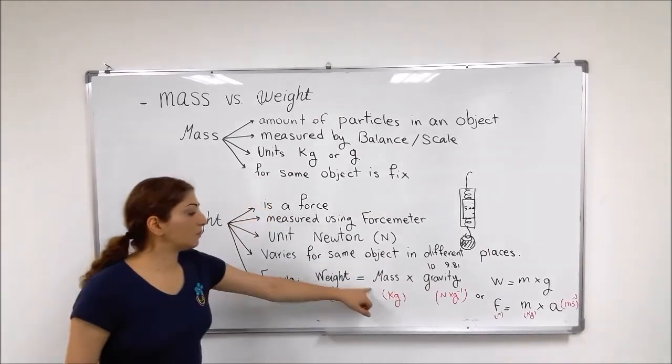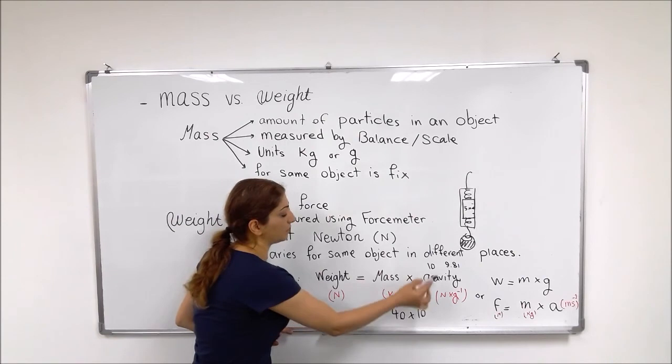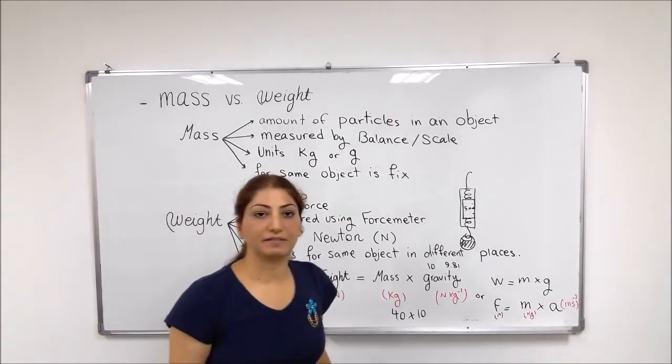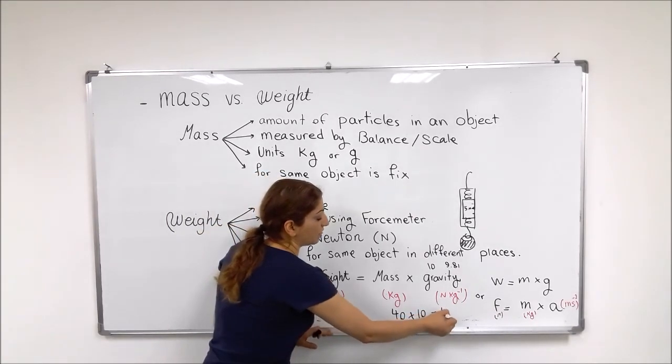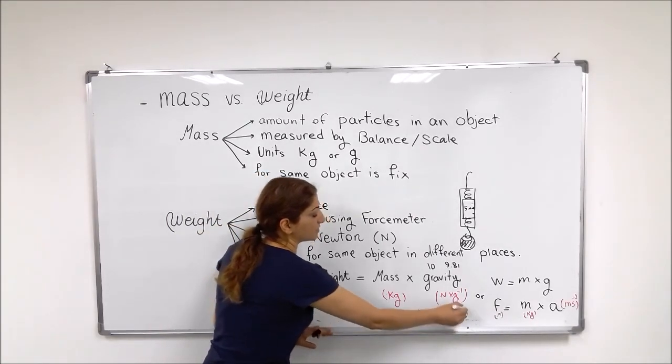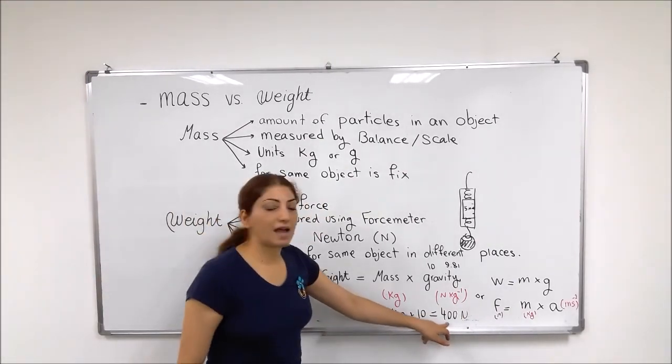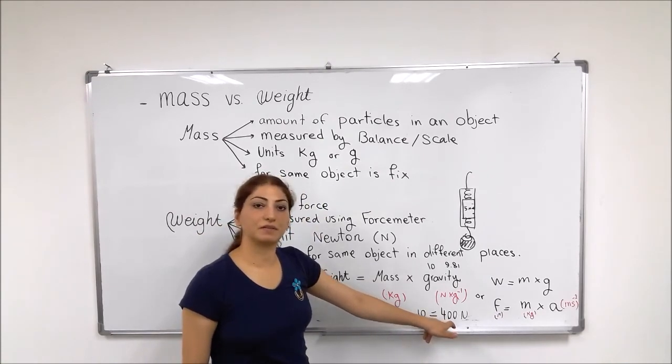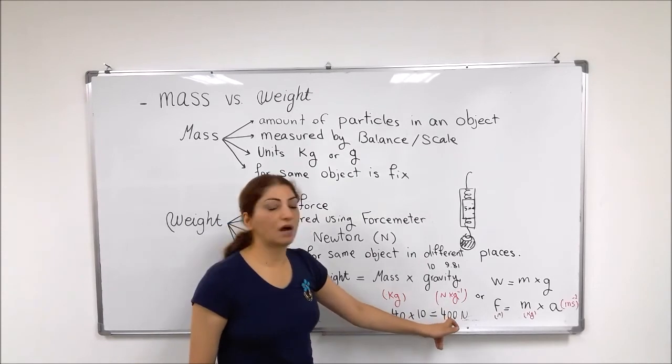So if you want to convert, if my mass, for example, is 40, so it becomes 40, times 10 or 9.81, which gives you a more accurate result. Then it would be 400 Newtons. It means that on the earth, I weigh this much, 400 Newtons. So my mass is 40 and my weight is 400 Newtons.